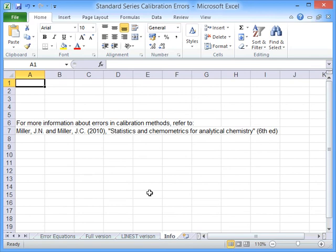So just finally, if you'd like some more information about errors in calibration methods, then you can refer to Miller & Miller Statistics and Chemometrics for Analytical Chemistry.